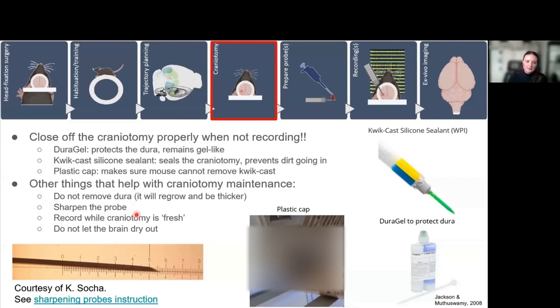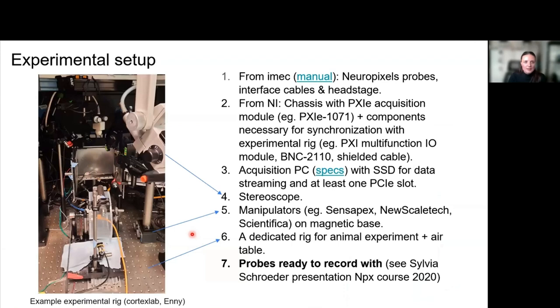You can also sharpen the probe—it's very recommended to sharpen the probe. You should record as soon as possible after you did the craniotomy and make sure you do not let the brain dry out. Many people use saline or ACSF during the recording so that the tissue doesn't get dried out. I personally now use DuraGel from the start of the recording and insert the probe through the DuraGel. The upside is that it never evaporates, so you don't have the problem of the brain drying out. The downside is that it tends to stick to the Neuropixels probe, so you need to clean a lot more.